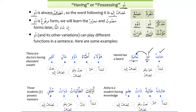In a sentence like 'haulai atibbau dhu malin kathirin,' haulai is mubtadaun, atibbau is khabarun, and dhu here is being used as a sifa — an adjective — for atibbau, while also being used as mudaf for malin. So: dhu is naatun wa huwa mudaafun, malin is mudaf ilayhi, and kathirun is naatun for malin. The meaning is: these are doctors having abundant wealth.